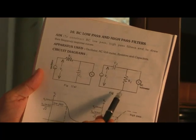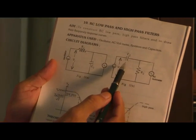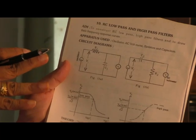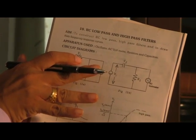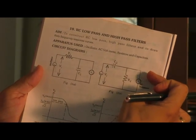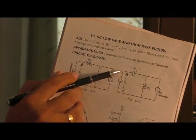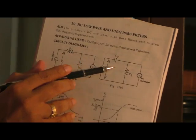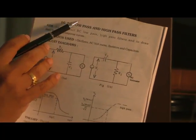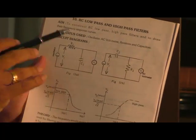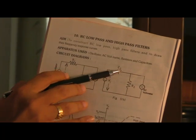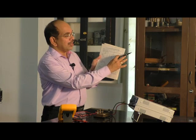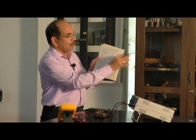Coming to the high-pass filter, here the capacitor is placed such that the signal is given across the RC combination, whereas the output is taken across the resistor. For lower frequencies, the impedance or reactance of the capacitor is very high, so the signal cannot pass through. Whereas for higher frequencies, since the reactance is low, the signal passes through the capacitor and you get sufficient voltage at the output terminal.